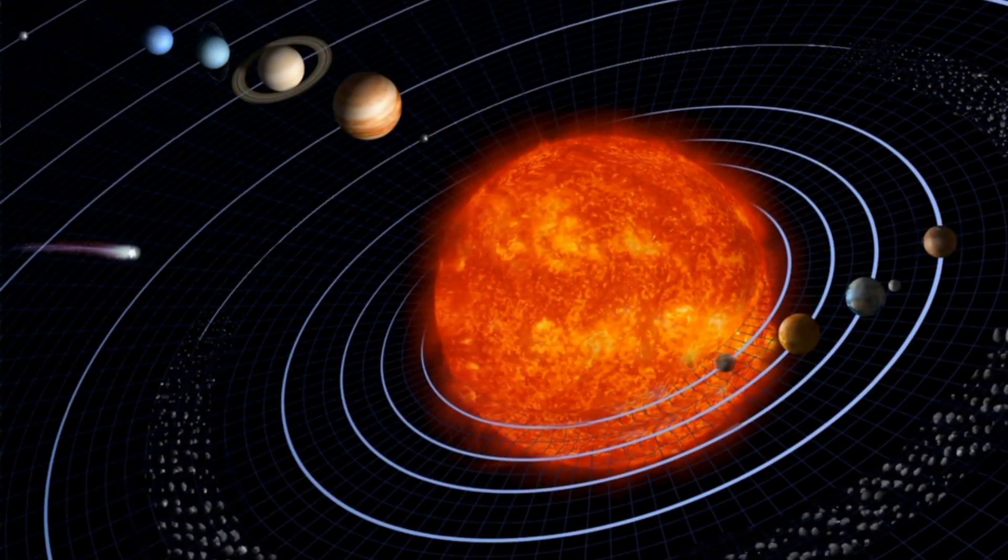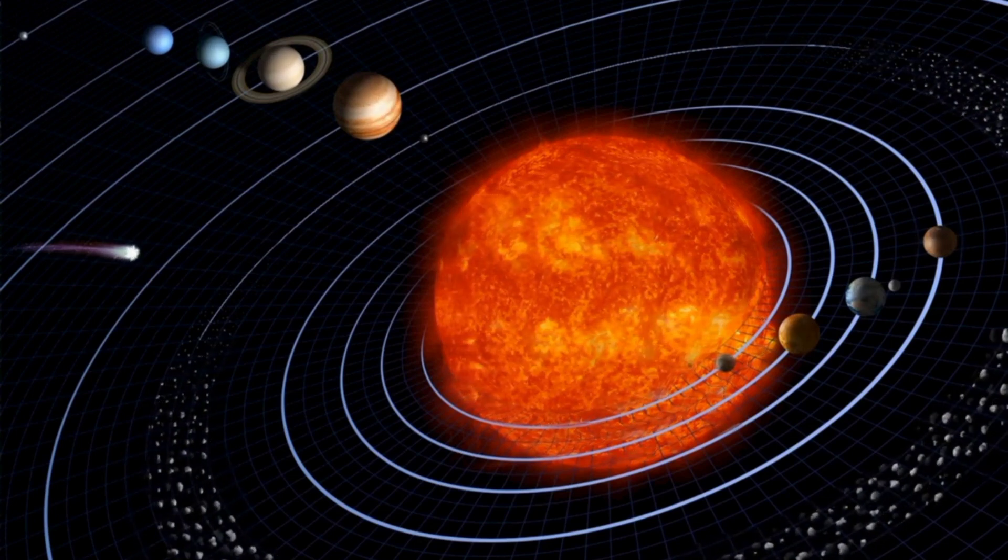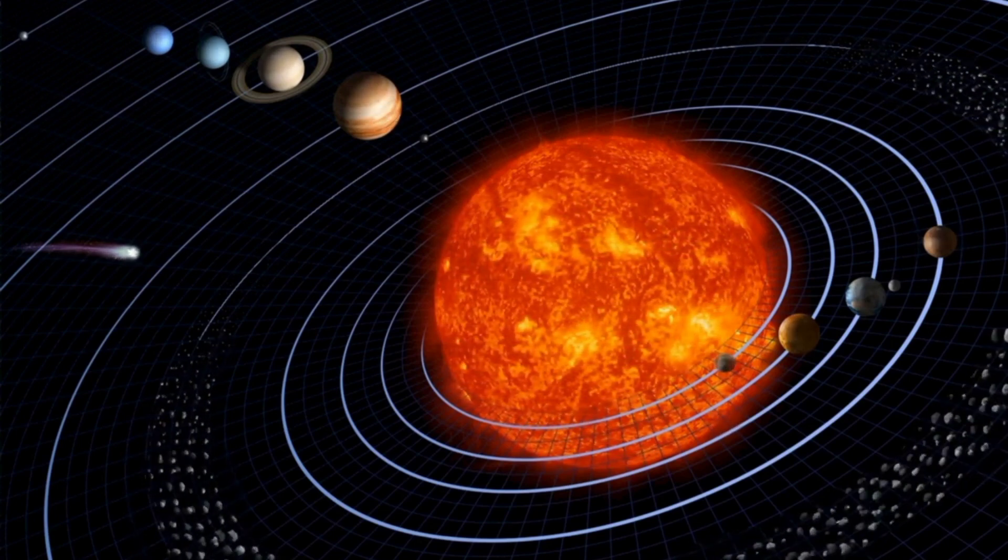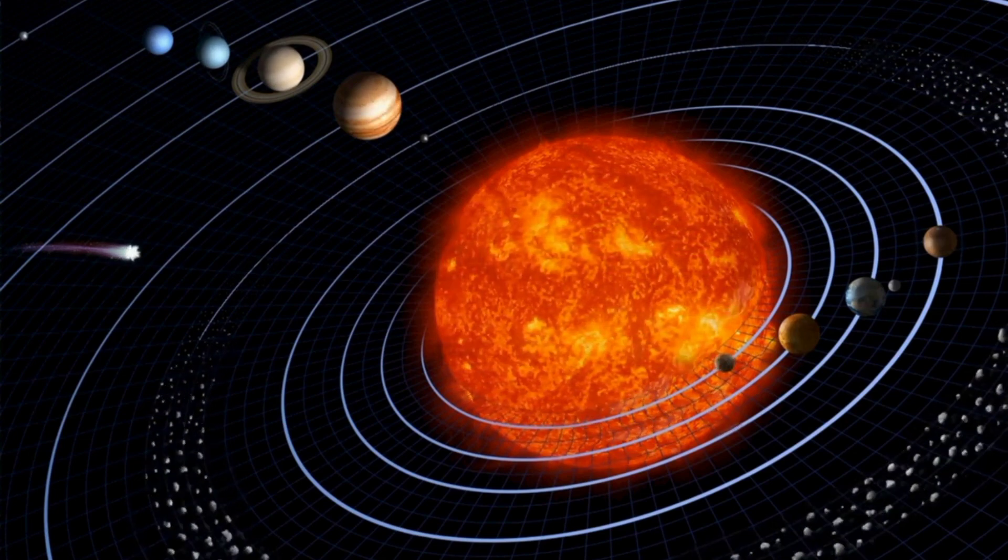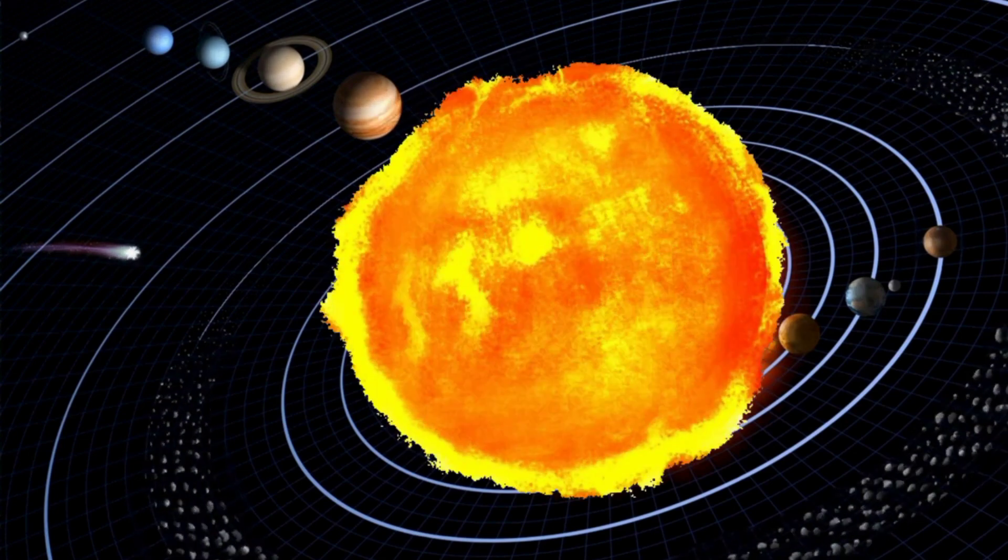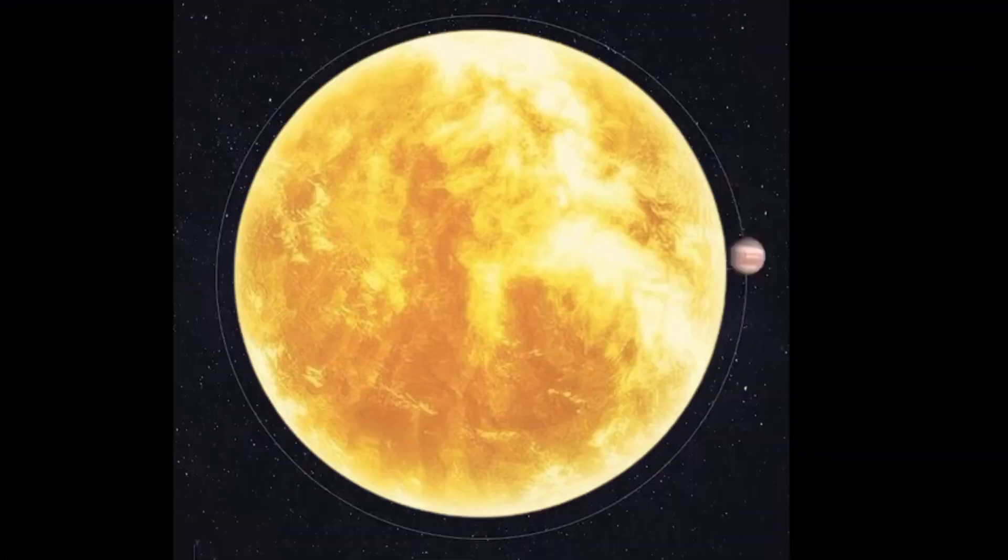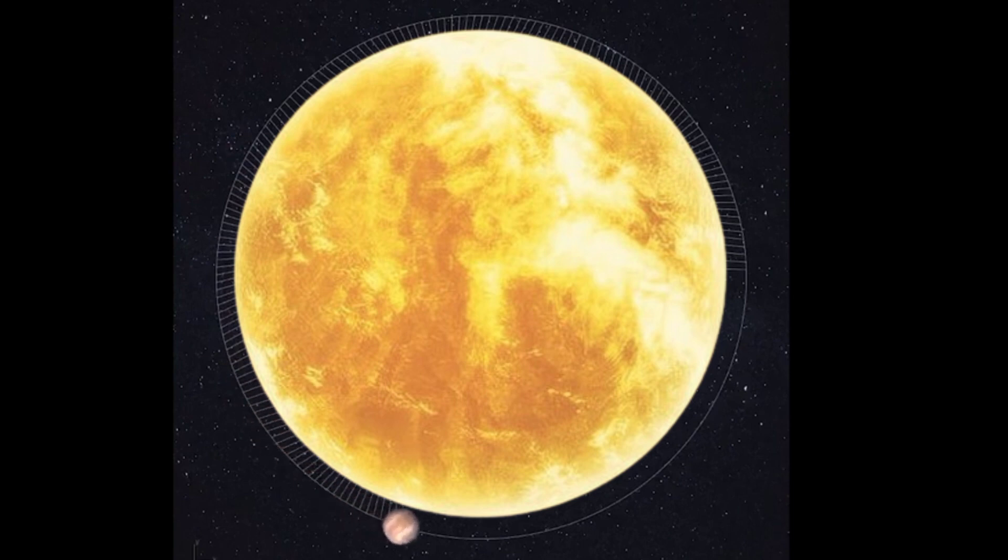Picture the sun, our life-giving star, a blazing orb of fire. Now, inflate it, expand it, make it 1,700 times bigger. That's UY Scuti. Its radius, the distance from its center to its edge, may extend to Jupiter. If you place UY Scuti where our sun is, its fiery breath will singe Mercury, Venus, and even Earth.